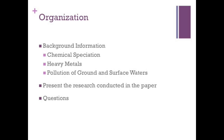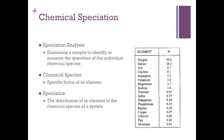I'm going to start by giving you some background information so that you'll be able to understand the material better. First, we're going to look at chemical speciation, followed by heavy metals, and finally pollution of ground and surface waters. Speciation analysis is the analytical activity of examining a sample — in this case water — to identify or measure the quantities of the individual chemical species in the sample. Chemical species are specific forms of elements, for example molecular structures, oxidation state, and isotopic composition. Speciation of an element is the distribution of the element in the chemical species of a system.